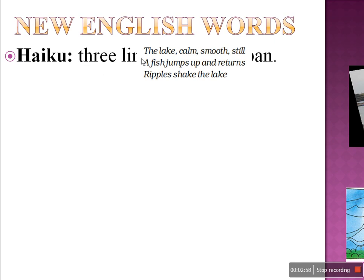You can read this example: 'The lake — calm, smooth, still. A fish jumps up and returns, repulse, shake the lake.' These three lines you can see — this is called a Haiku.